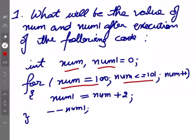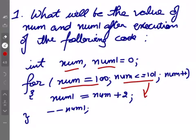Thik hai, so pehli baar woh check karega ki num 100 hai, 100 less than equal to 101 is true, so woh yahaan se a jaega andar. Ab yeh jho statement hai num1 is equal to num plus 2. Num right now 100 hai, 100 plus 2 will be 102, so num1 ki value abhi ho ghi that should be 102. Uske baad minus minus num1, matlab num1 ki value ko 1 se decrease kar do, to usi jagah par num1 decrease ho ke 101 ho jayega.